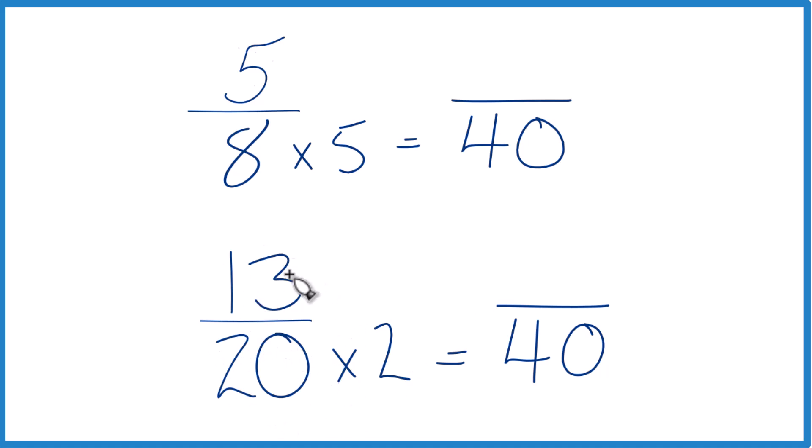I have to multiply the numerator as well. That's because 2 over 2 is 1, so I'm just multiplying by 1. I don't change the value, just the way it's represented. 13 times 2, that's 26. 5 times 5 equals 25.